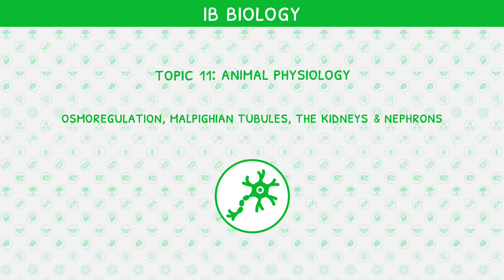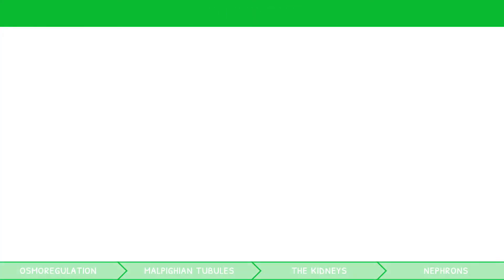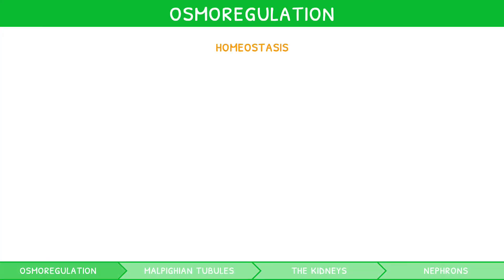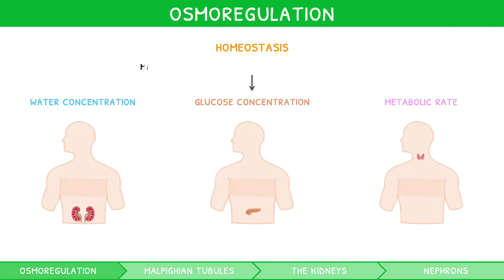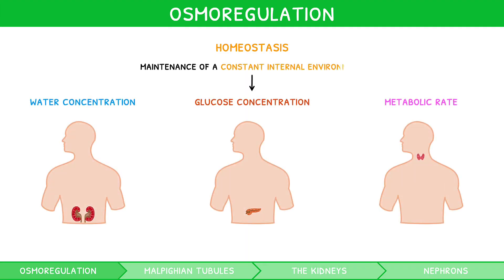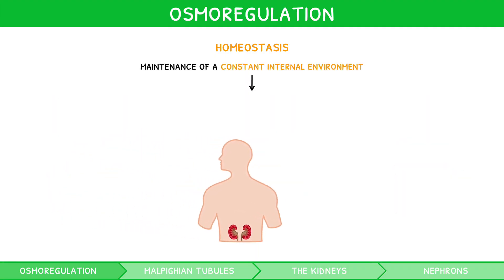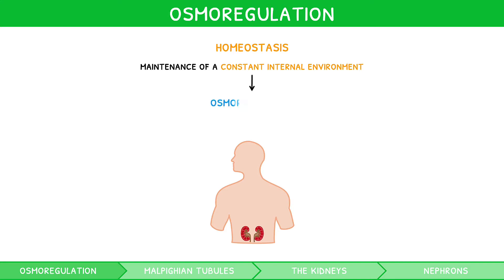In the first video of IB Biology Topic 1, we introduced homeostasis as the maintenance of a constant internal environment. When this occurs with reference to water, it is known as osmoregulation, defined as the regulation of water and solute concentration within an organism.